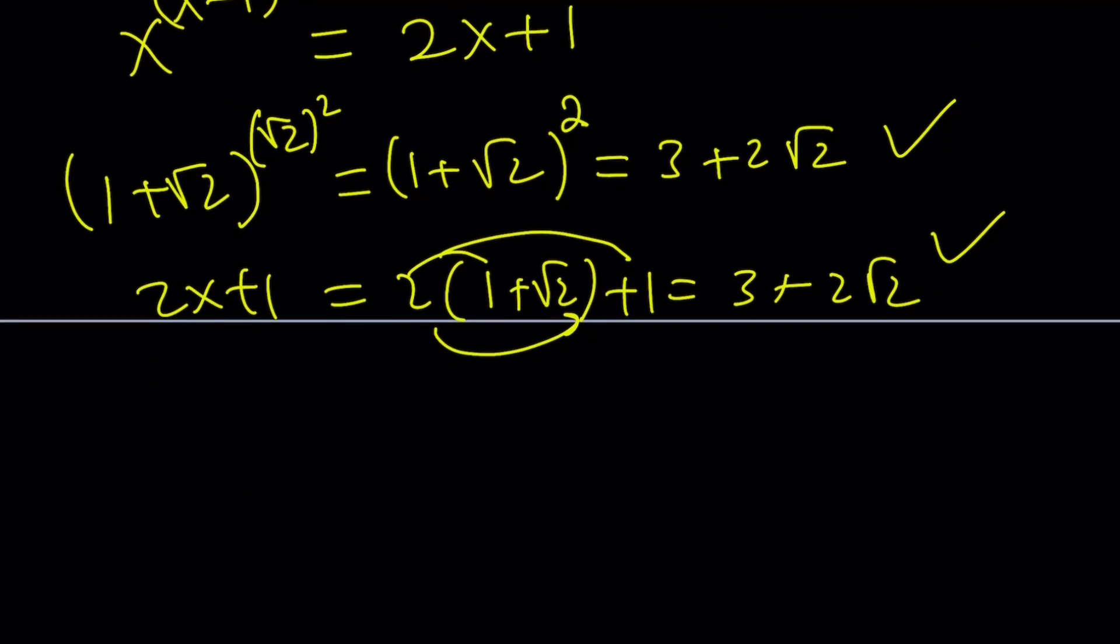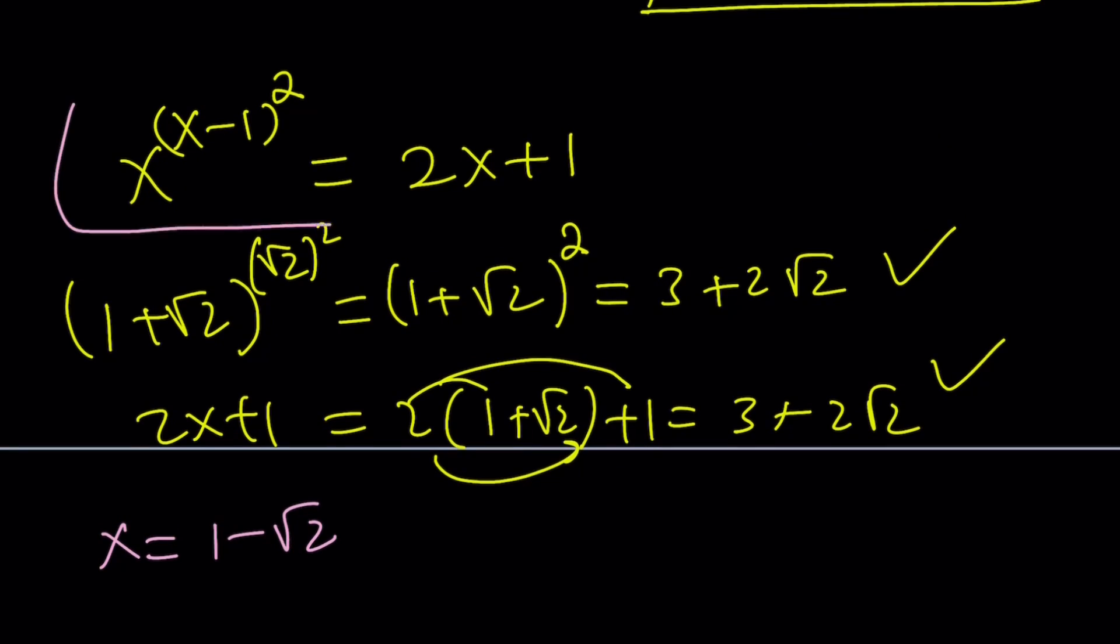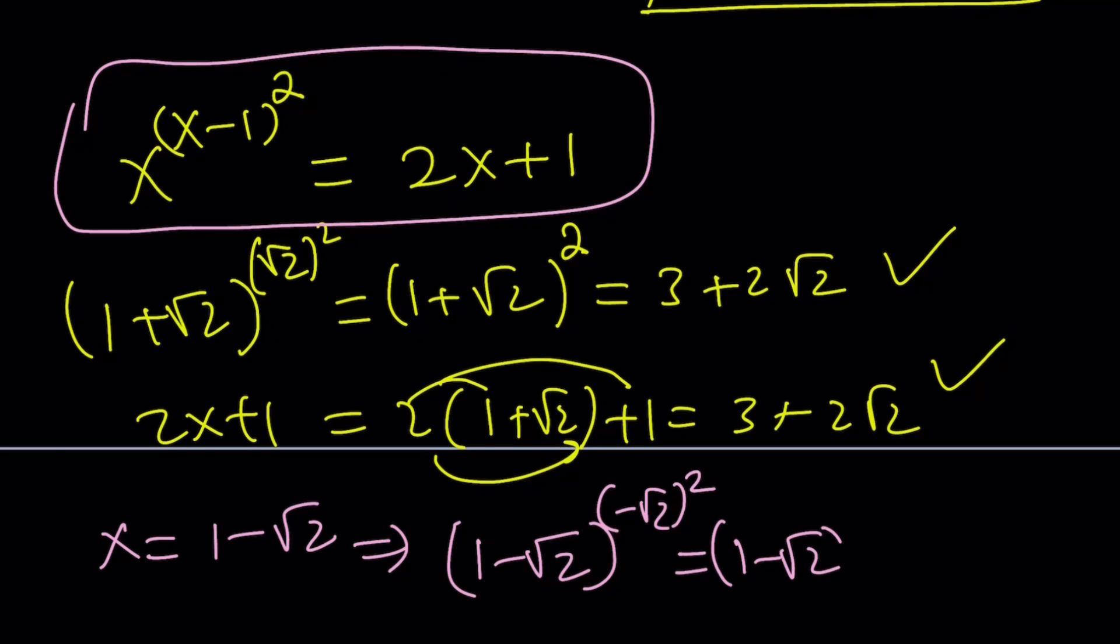If you replace x with 1-√2, what happens? We're going to use the original equation. So replace x with 1-√2 to the power (1-√2-1), which is (-√2)². And this is (1-√2)². Remember, there are two numbers whose square equals 2: √2 and -√2. And this is one of them.